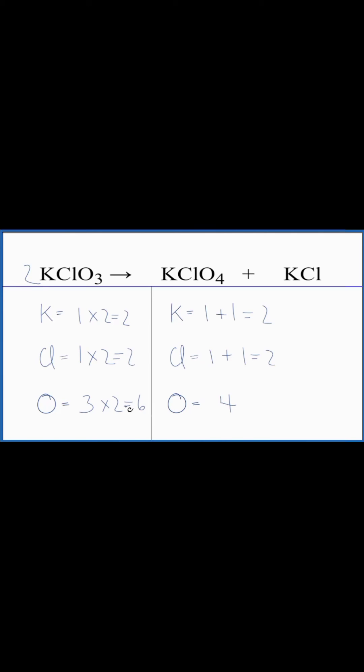So we can change our coefficient here to four. And we have one times four. That'll give us four potassiums, one times four. Four chlorines, three times four. That gives us twelve oxygens.